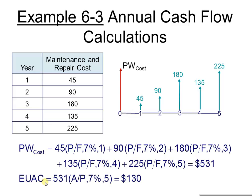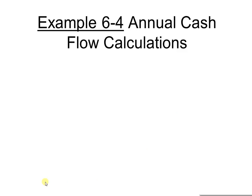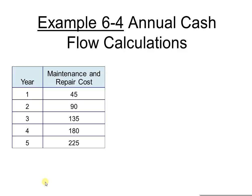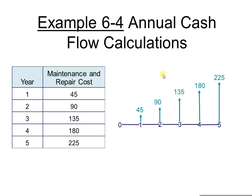Here's another example — example 6.4. The costs are 45, 90, 135, 180, 225. Drawing the cash flow diagram, notice they always increase by $45. Starting at 45, then adding 45 gives 90, adding another 45 gives 135, then 180, then 225. This is a structured pattern — can you identify it?